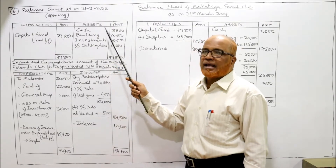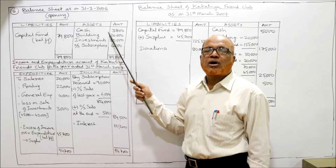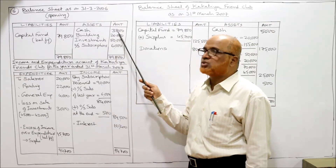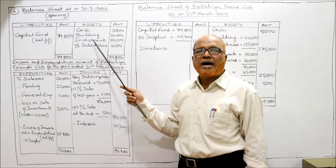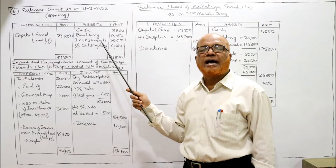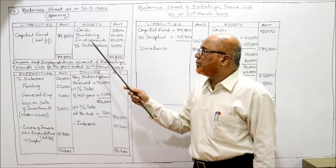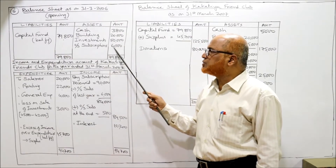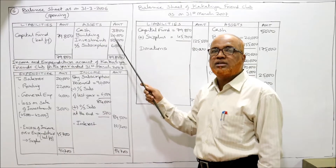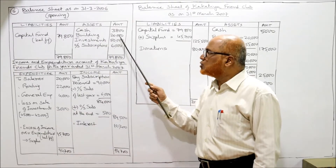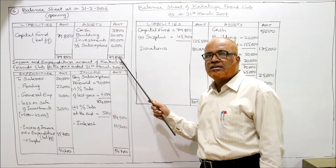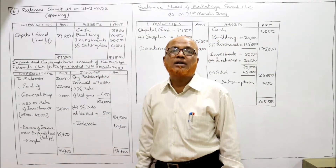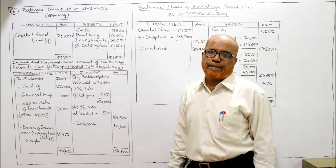From the receipts and payments account, opening cash is 3,800. Adding the opening balances — building 20,000, investment 50,000, outstanding subscription 6,000 — the total is 79,800. This balancing figure of 79,800 is the capital fund at the beginning of the year.